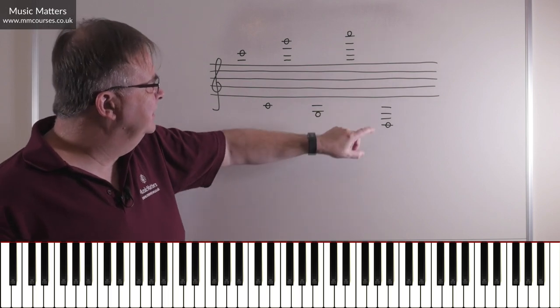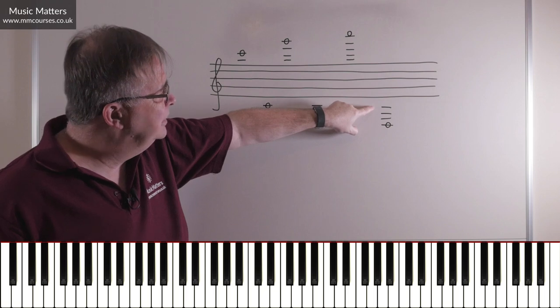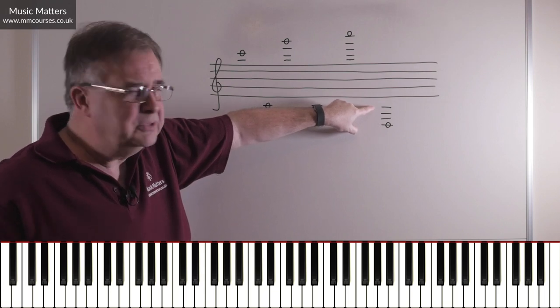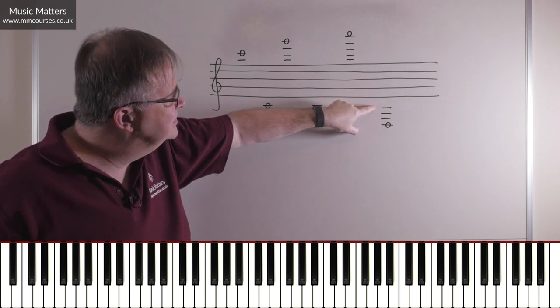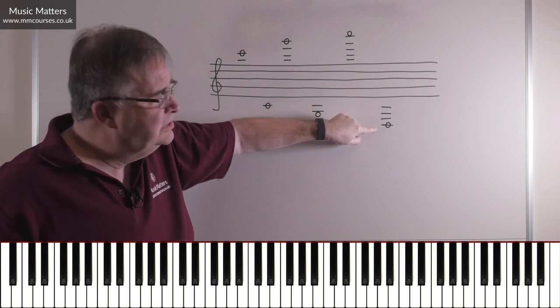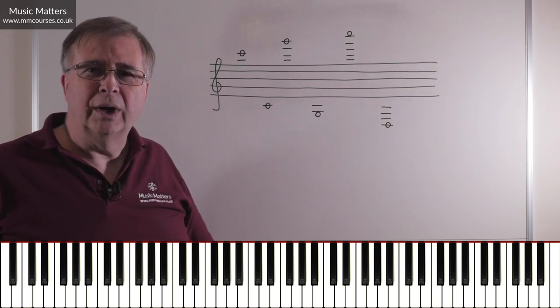Okay, what about this one? Well here's the first ledger line below the treble clef, we know that's middle C, so let's skip down in thirds from one line to the next. C, A, F, D. So you get there quite quickly.